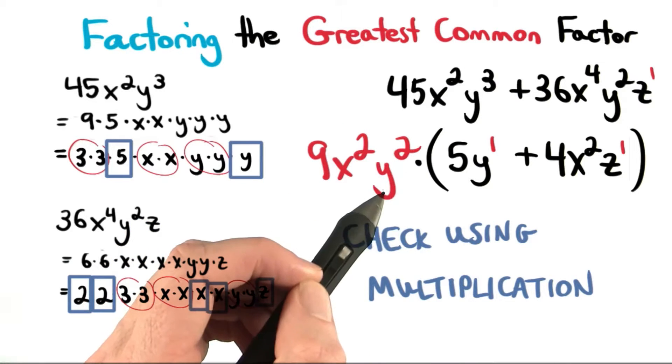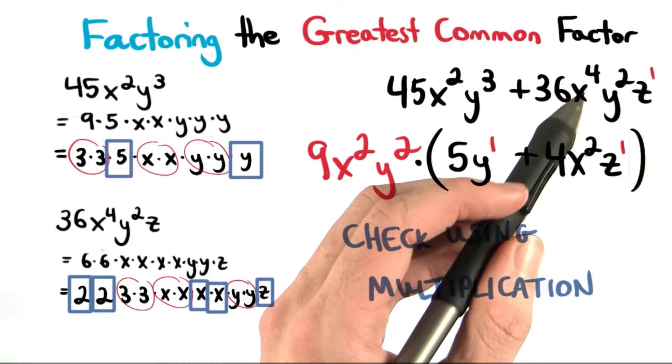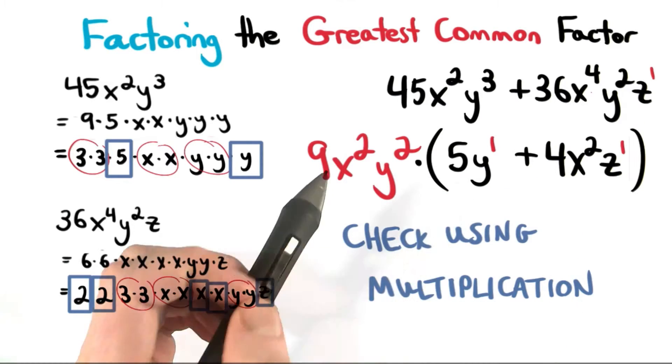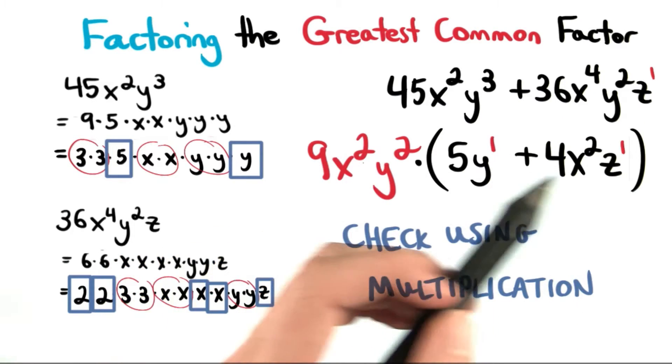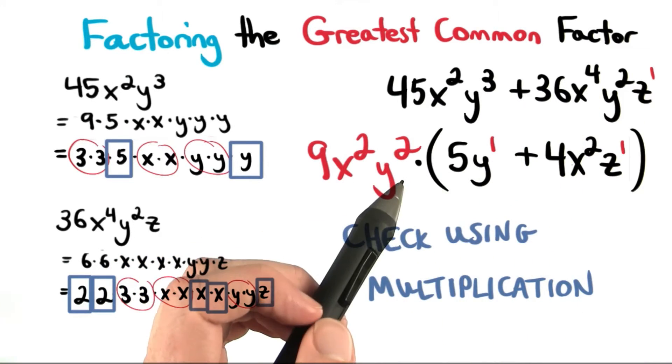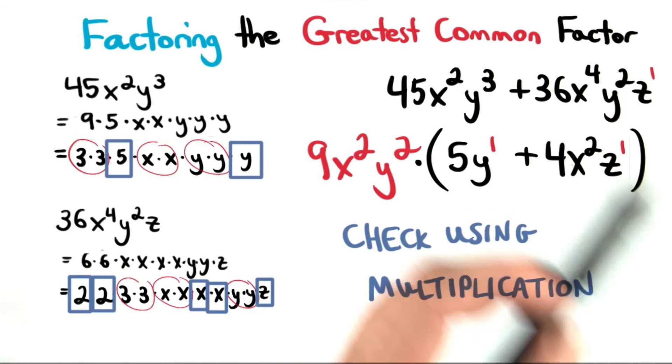And 9x squared y squared times 4x squared z would be 36x to the 4th y squared z. 9 times 4 is 36. x squared times x squared is x to the 4th. And then we have y squared and z on the end.